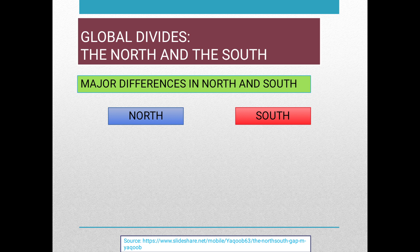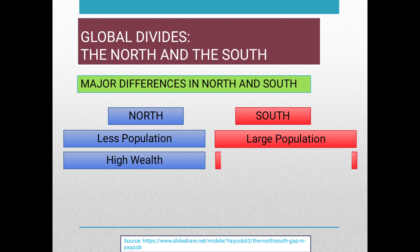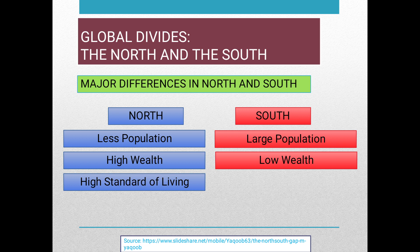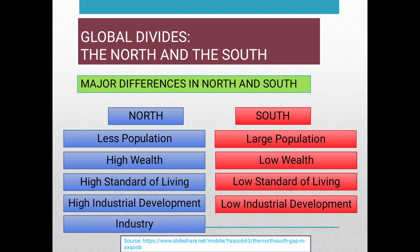Here are the major differences between the North and the South. The North has less population, while the South has a large population. The North has high wealth, while the South has low wealth. The North has a high standard of living, while the South has a low standard of living. The North is focused on industry, while the South is focused on agriculture.